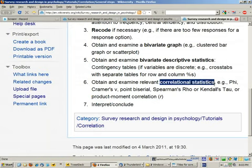Sixthly, we can get the correlational statistics, and depending on the level of measurement, that could be phi or Cramer's V for nominal by nominal data, point-biserial for dichotomous by interval or ratio data,